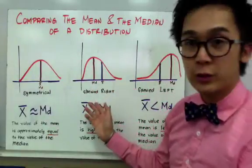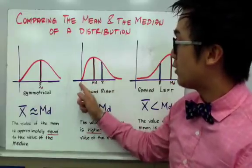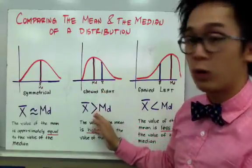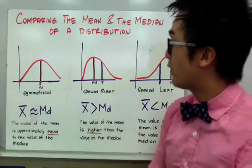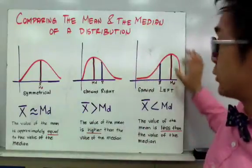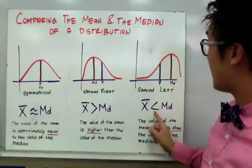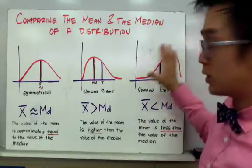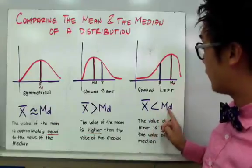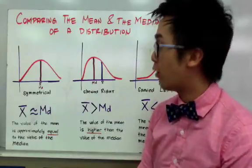If the distribution is skewed to the right, the value of the median and the mean are now far apart. The value of the mean will be slightly higher than the value of the median when your distribution is skewed to the right. And if the distribution is skewed to the left, the value of the mean is less than the value of the median. This is how you can compare the mean and the median just by looking at the shape of their distribution.